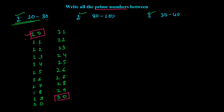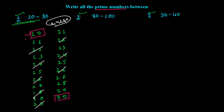Numbers divisible by 2 are all even numbers — those ending with 2, 4, 6, 8, and 0. So here, 12, 14, 16, 18, 20, 22, 24, 26, and 28 are all divisible by 2 and we cancel them.